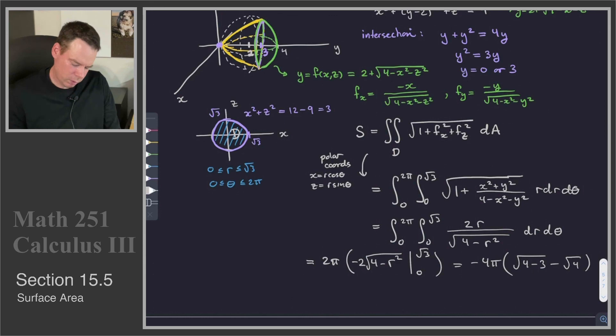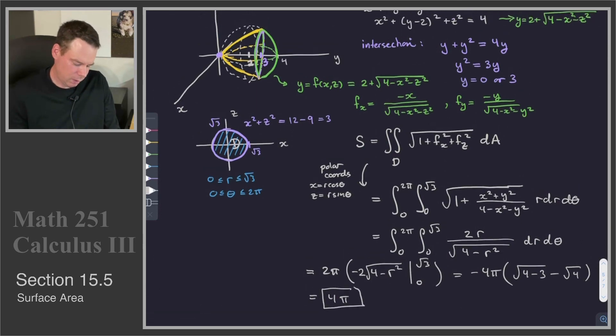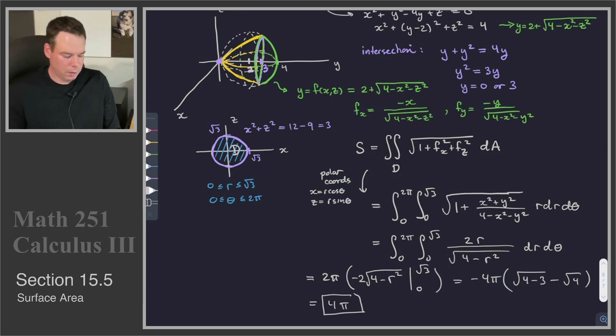So this becomes negative 4 pi times the square root of 4 minus 3 minus the square root of 4. Or in other words, it's 1 minus 2, or negative 1, times negative 4 pi, so we get a result of 4 pi. And so that is the area of the portion of the sphere that lives inside the paraboloid.